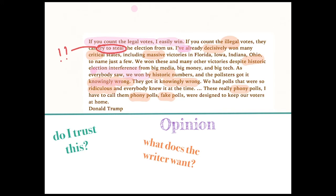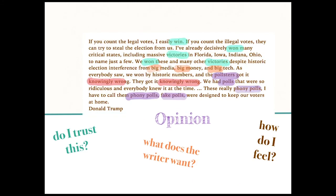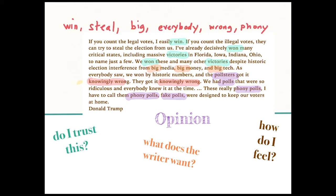It wants to make me feel bad — maybe sad or angry. How do I actually feel about it? Critical thinking includes thinking about the structure itself. The structure is very repetitive and the vocabulary is very, very simple. I also see some very general claims, like 'everybody saw' and 'everybody knew.' This is the structure and language that a child would use. But these are not the words of a child — they are the words of a very powerful world leader. That seems like a conflict, and it's critical reading skills that let me analyze that and name what there is about this piece of writing that might make me uncomfortable.